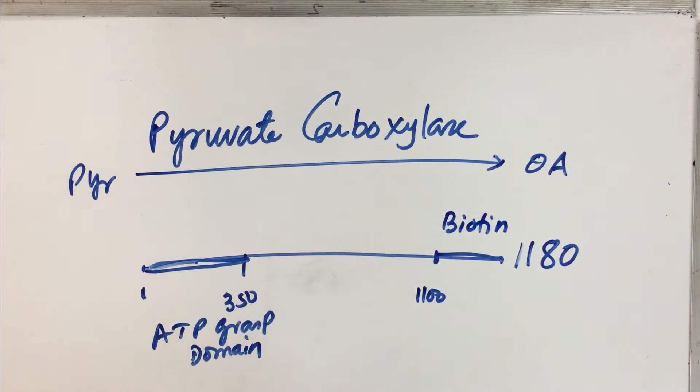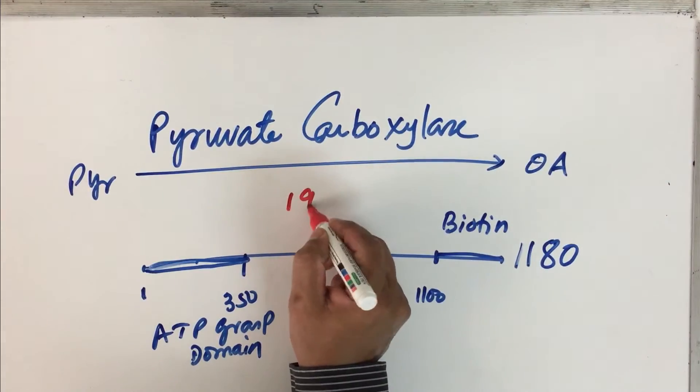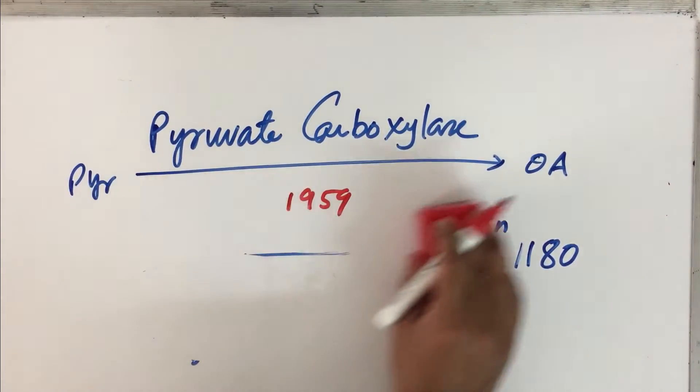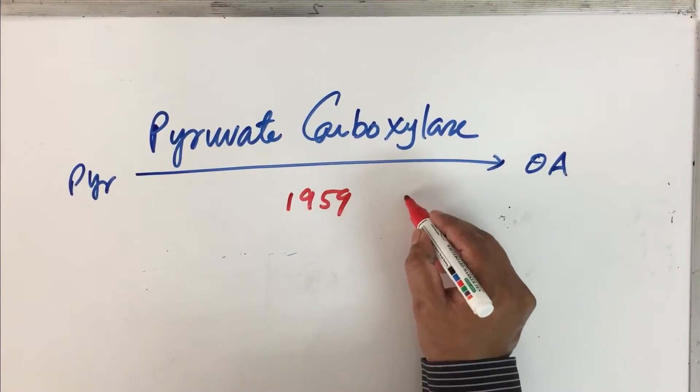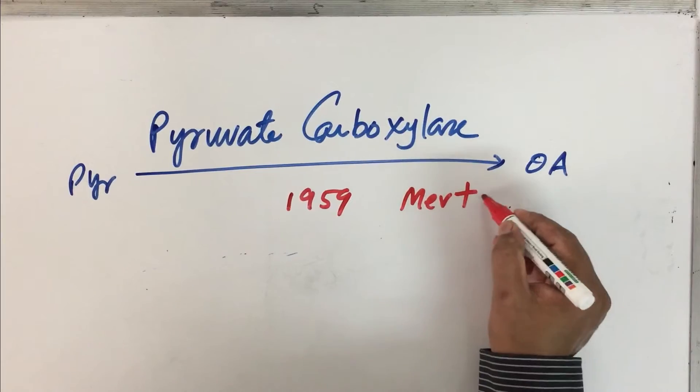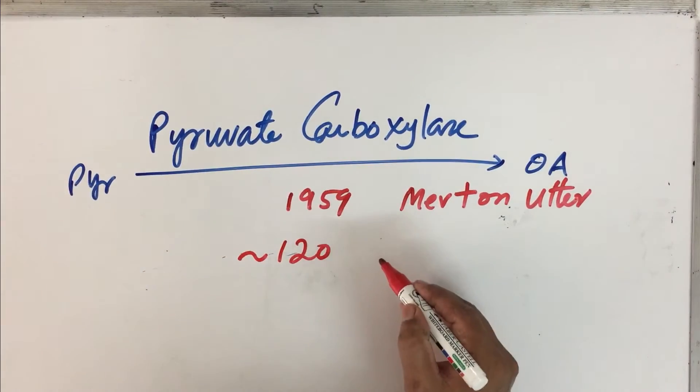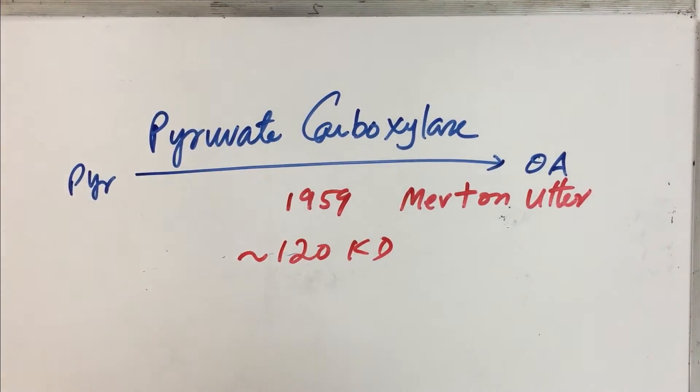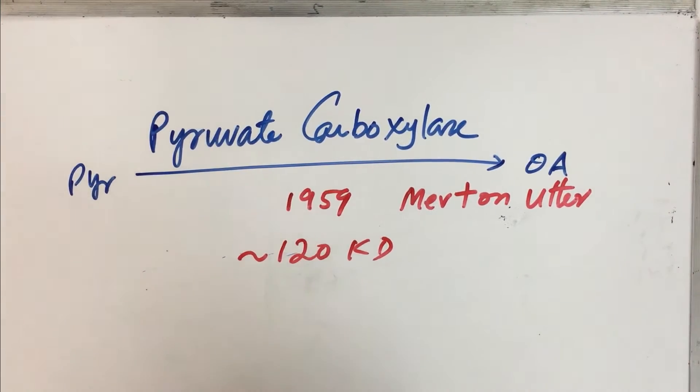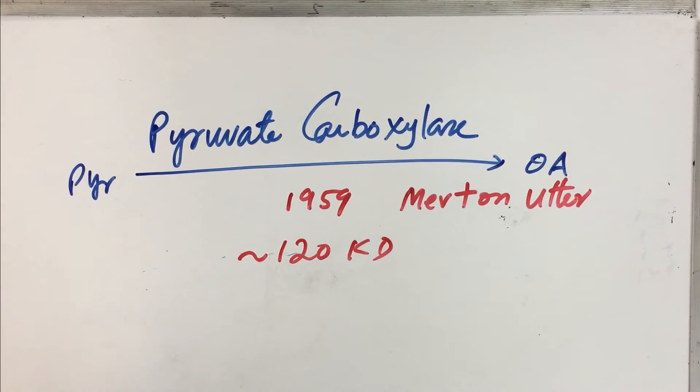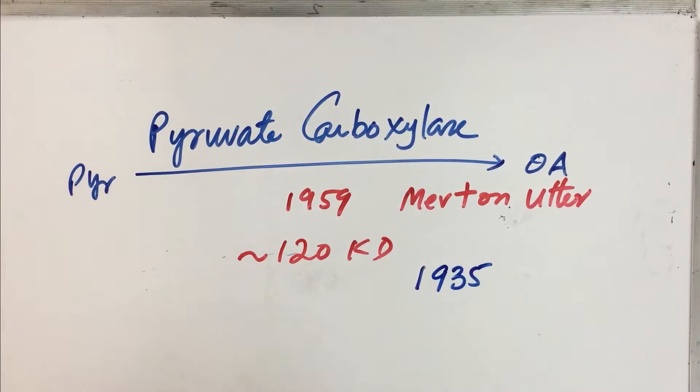Now remember this enzyme was discovered in 1959 by a scientist called Merton Otter. This is a tetrameric enzyme. You know that there are four subunits. Each of the subunit has got roughly about 120 kilodalton, that is the molecular weight of each subunit. And each subunit can bind to a biotin. Remember biotin was discovered only in 1935.